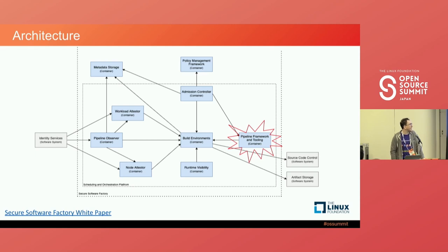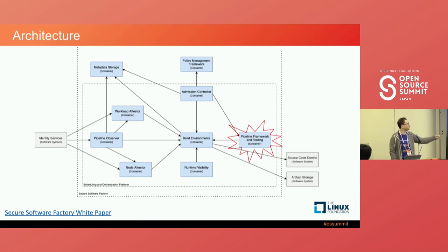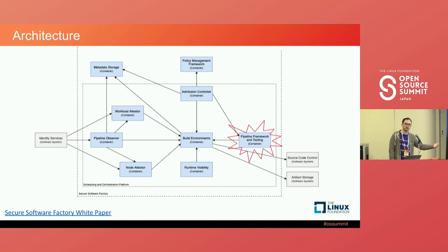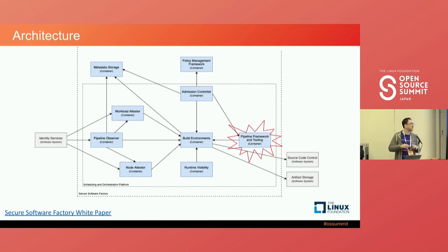Now that we've looked at the pipeline framework securing build orchestration, and the workload and node attesters ensuring only approved workloads run on approved hardware, how do we make sure a running container isn't tampered with? That could be a malicious build image, malicious code inside the build image, or somebody trying to exec into the container. That's where runtime visibility comes into play — using eBPF. It's not about any one tool, but a combination including in-toto and other processes to verify that what you intended to run is actually what's running.